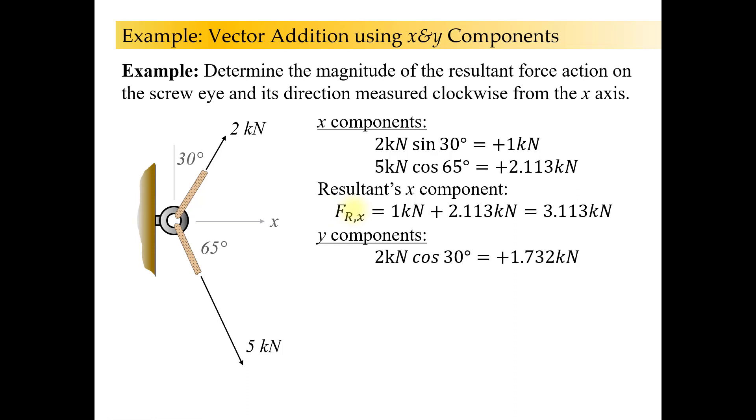Now let's do the same thing with the y component. So y component. 2 kilonewtons. Oh, cosine now, right? Adjacent over hypotenuse. 2 kilonewtons times the cosine of 30 degrees. 1.732 kilonewtons. Positive because it's pointing up in the positive y direction.